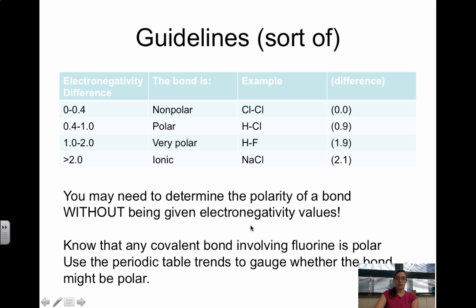If you have to determine the polarity of a bond without being given the electronegativity values, something to help is any covalent bond that involves fluorine is polar. So if you have anything with fluorine, it's going to be a polar bond. Carbon and hydrogen, that's always nonpolar. And any diatomic molecule, whether it's H2, F2, I2, because those are equal, that's going to be nonpolar as well. So hopefully that will help you as you work through determining the bond type.